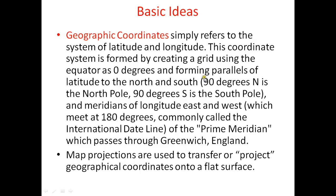There is another important coordinate system: the geographic coordinate system. We use this for GIS and for the Earth, especially to measure positions on the surface. The geographic coordinate system simply refers to the system of latitude and longitude. Any point on the Earth can be measured using latitude and longitude. Since we are on the surface, we generally do not need the radius.